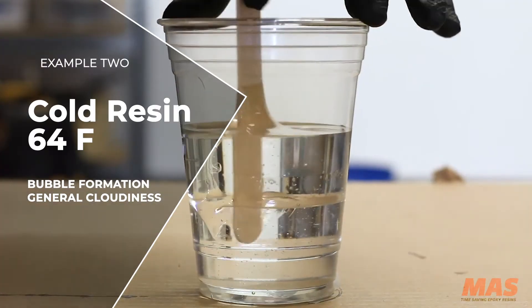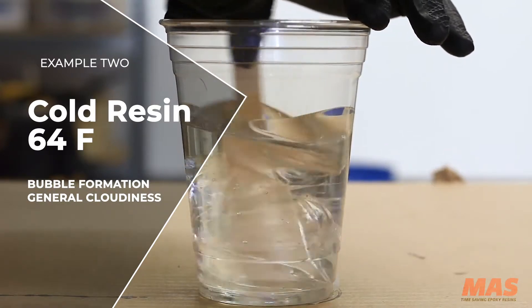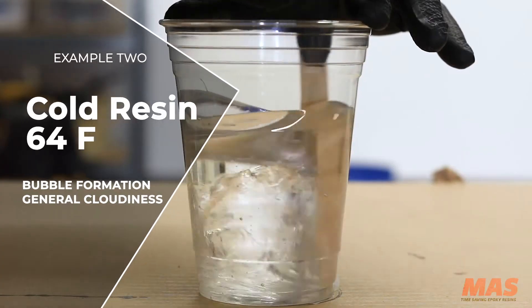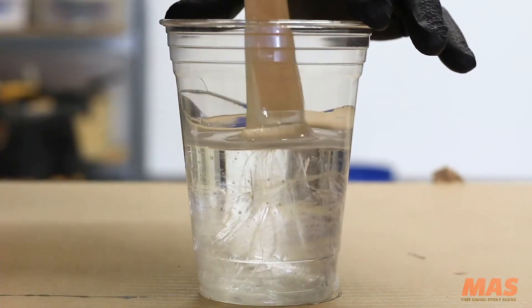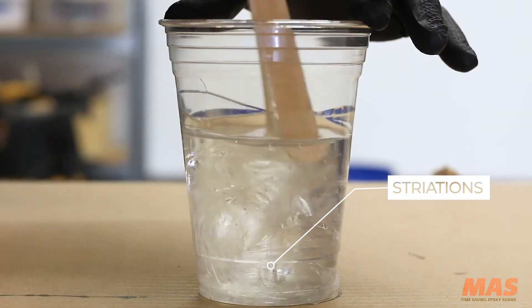Now don't freak out if you did get some micro bubbles and it's less than optimal temperatures in your shop. You can take that jug of epoxy part A, make sure the cap's on good and tight, and just place it in a bucket of hot water until it warms up to maybe 70 or 80 degrees. But keep in mind the warmer that you get part A, the faster it's going to kick off and it'll reduce your working time.